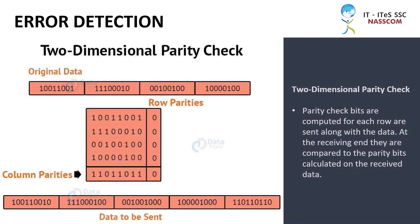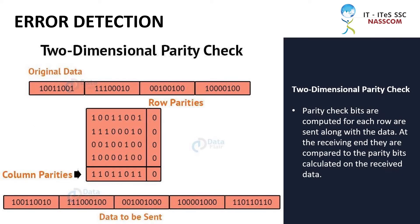Two-dimensional parity check: Parity check bits are computed for each row and sent along with the data. At the receiving end, they are compared to the parity bits calculated on the received data.